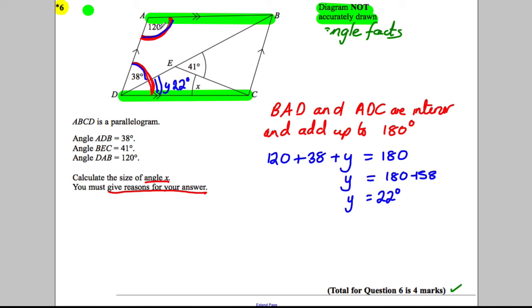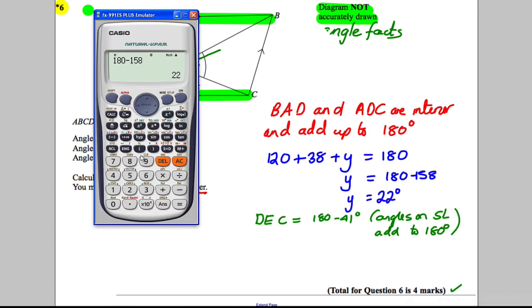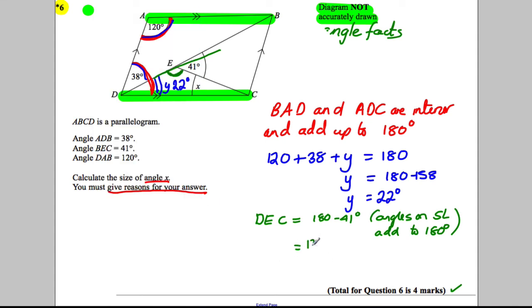Now how could we find X? Well what we could do is we could find this angle here. Now this angle here is going to be DEC. So we can say that angle DEC must be 180 subtract 41 because it's on a straight line with 41. So it must be 180 subtract 41 degrees, and we write Y, angles on a straight line add to 180. So 180 subtract 41 is 139. So this angle is 139 degrees. So this one is 139.